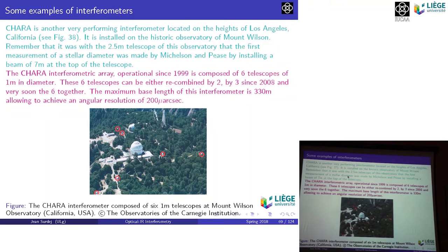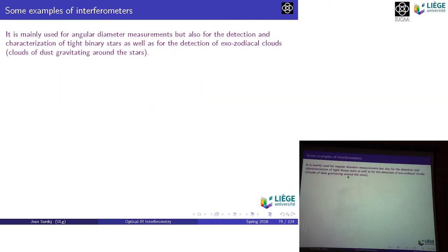With six telescopes, how many UV data points can you recover in one observation? You combine one with two, one with three, one with four... that gives six times five divided by two — fifteen baselines, fifteen UV data points simultaneously. Then you take advantage of Earth's rotation to get extremely good UV coverage and can perform aperture synthesis. CHARA is mainly used for angular diameter measurements, but also for detection and characterization of binary stars, detection of exozodiacal clouds, and more.